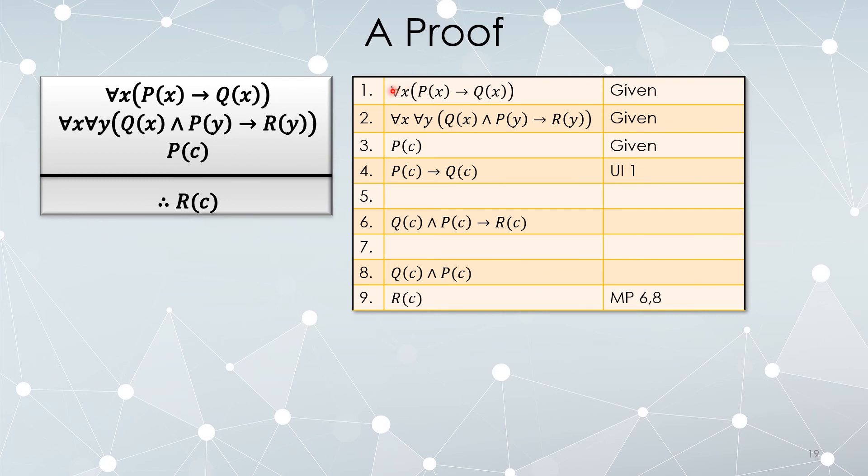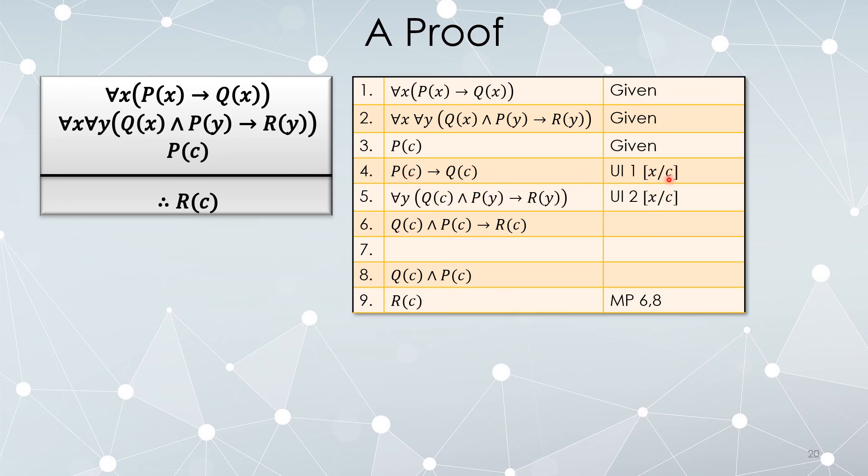I've got a universally quantified statement and instantiated by substituting in the variable c. Specifically, I've replaced every instance of x with c. Line 5. For any y, Q(c) and P(y) implies R(y). Where did this come from? Universal instantiation of line 2.